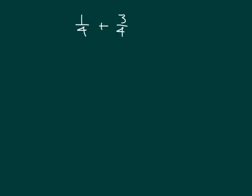Let's work out another problem. Here we have 1 fourth plus 3 fourths. Let's use a number line. These are like denominators, so we're going to divide our number line into fourths — 4 equal parts between 0 and 1. If I divide it in half first I'd have 2 parts, and divide that again I would have 4 equal parts.